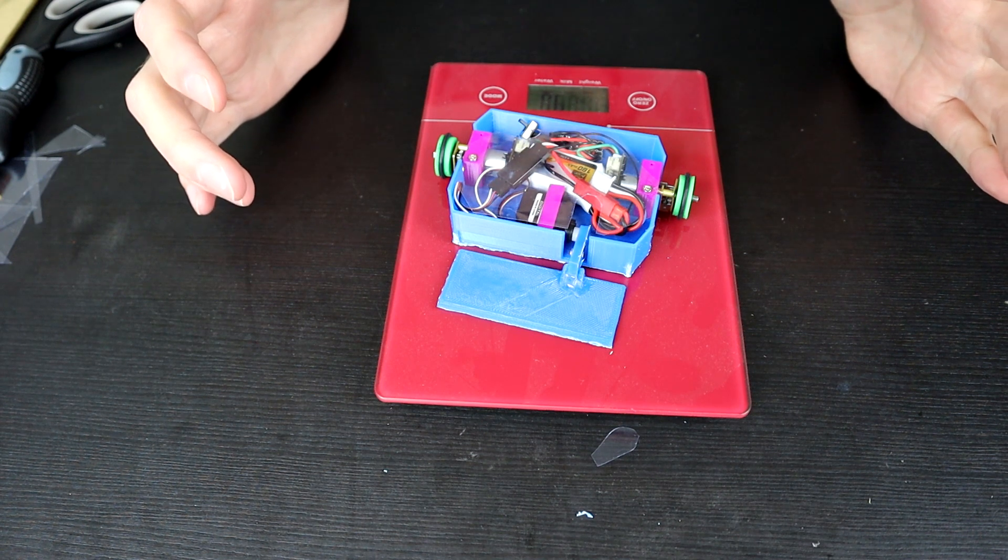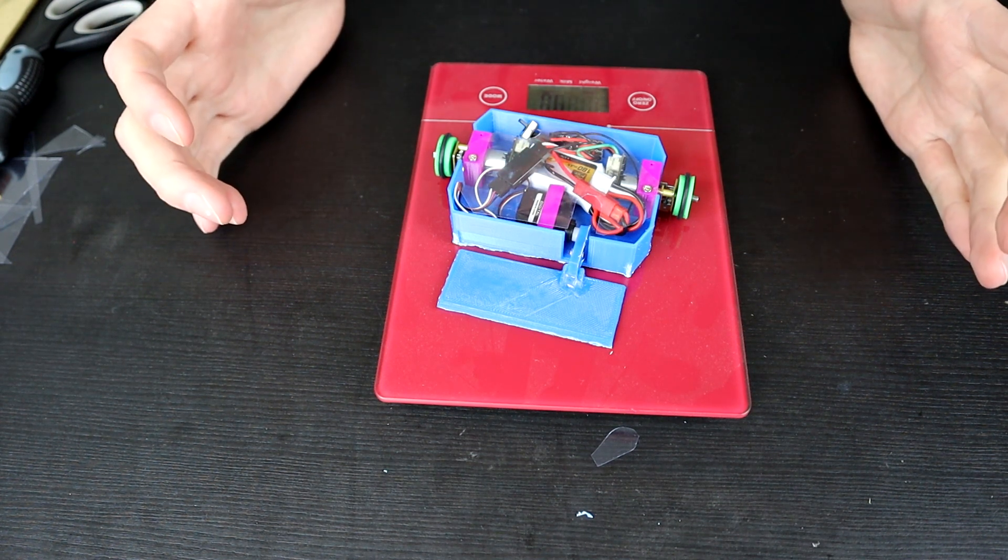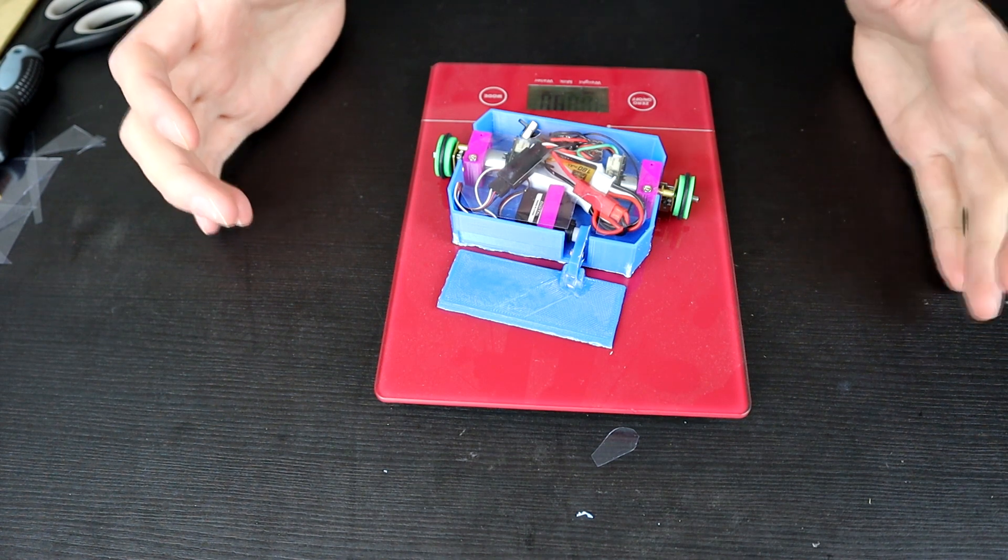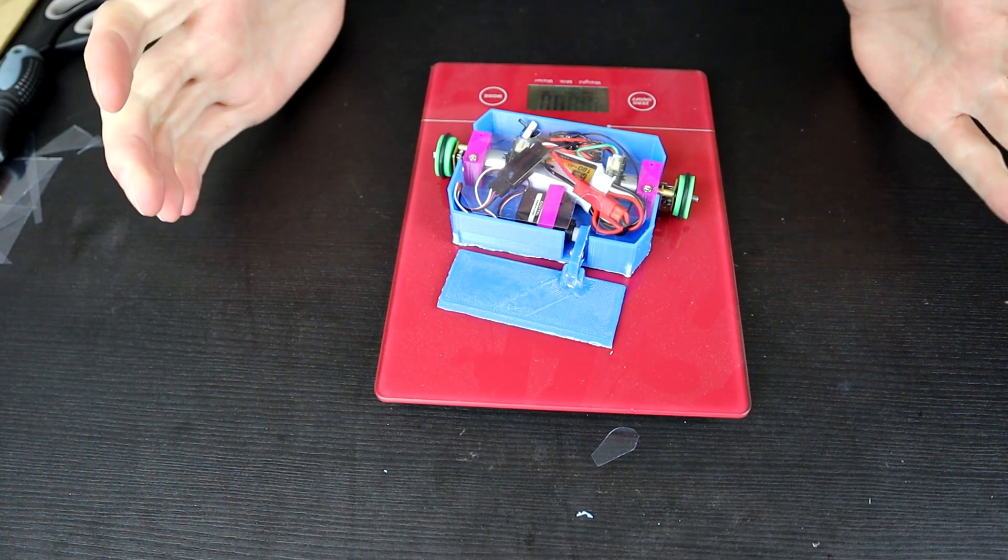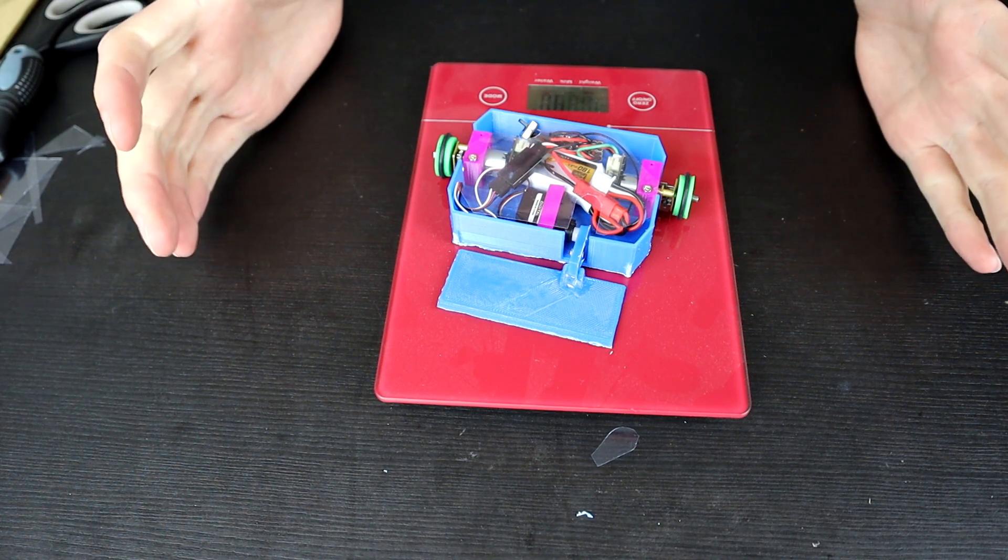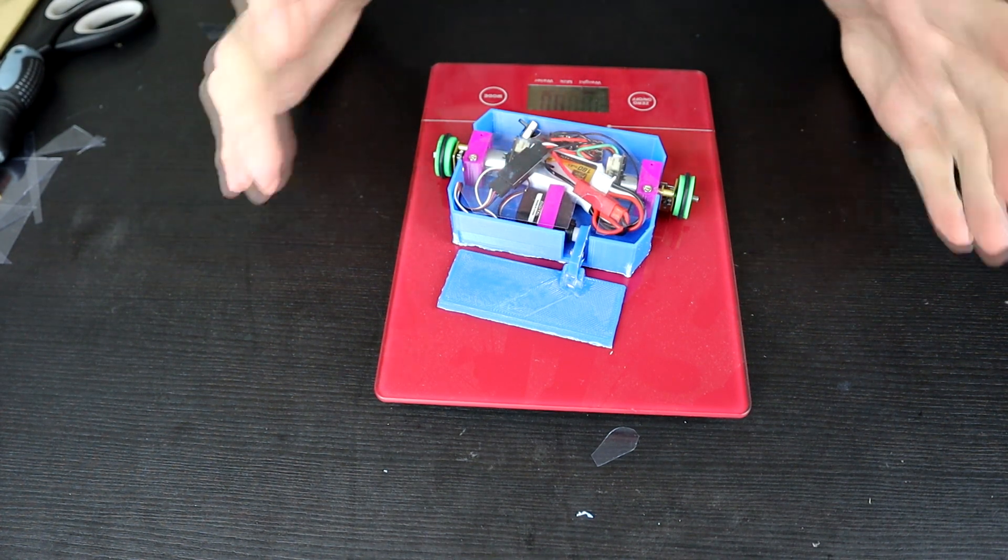Yeah, so this is it though. This is, I would say at this point complete as a 75 gram robot made entirely out of parts that I have put into antweights before. Yeah, there you go. It's functionalities are not really changed all that much.